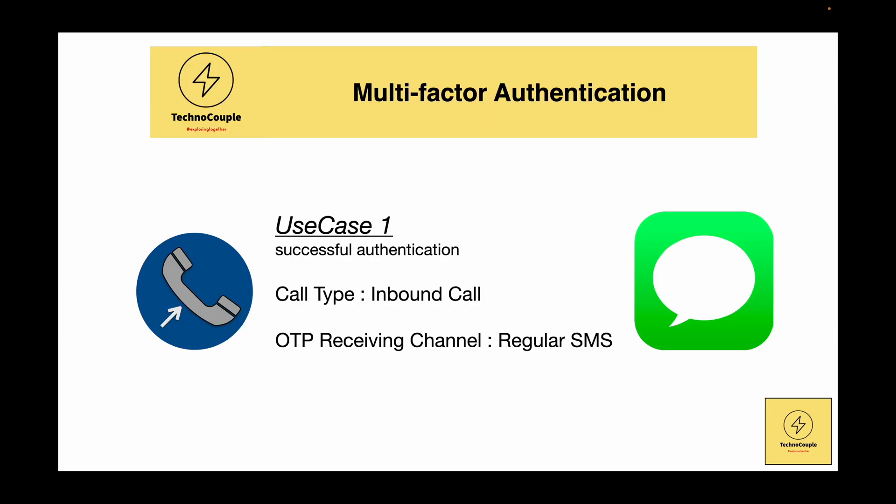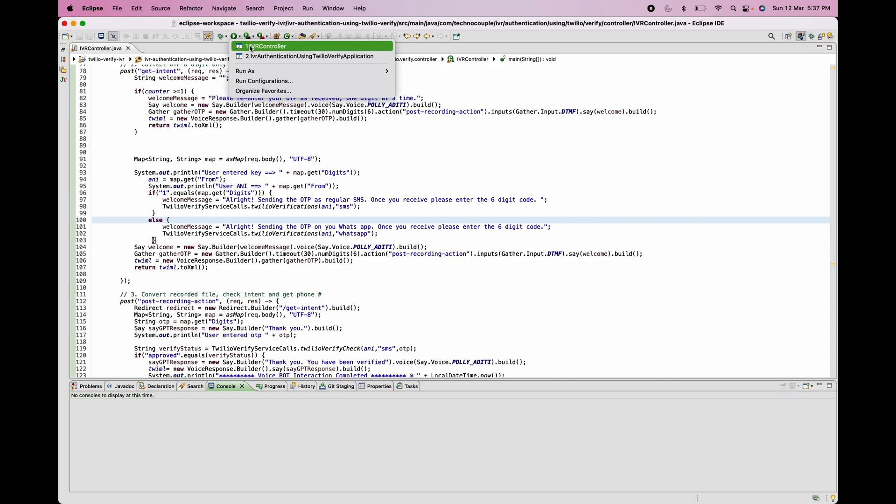We will now see the demo of our use case where we call into the IVR channel and receive an OTP on SMS for authentication. We will dial into the IVR, which will ask if we want to receive OTP on SMS or WhatsApp. We will choose SMS. After that, the OTP will be sent to the phone number from which the call was made. We are using Google Voice here, so we will use the Google Voice console for both making the call and receiving the OTP. Our application is not running right now, so we are going to start it.